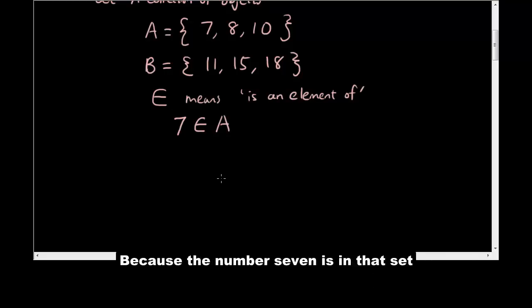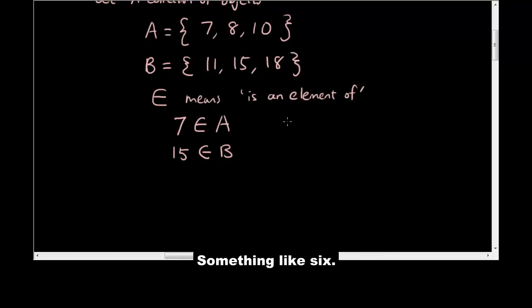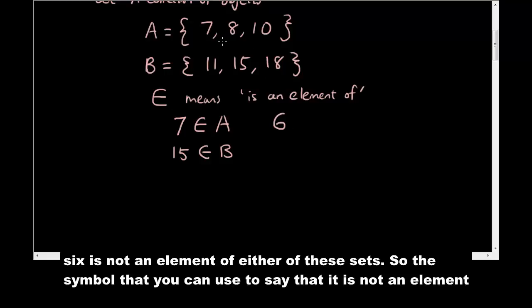Similarly, you can say that 15 is an element of B, because 15 is in the set B. Now what if you have something like six? Six is not an element of either of these sets.